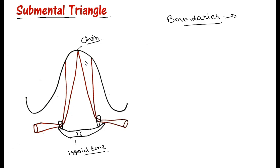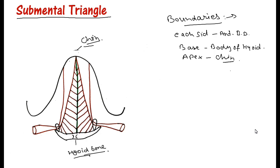On each side we have the anterior belly of the digastric, right and left side. Above is the chin, below is the hyoid bone. The base is formed by the body of the hyoid bone, and the apex is formed by the chin where the two muscles or two bellies will meet.